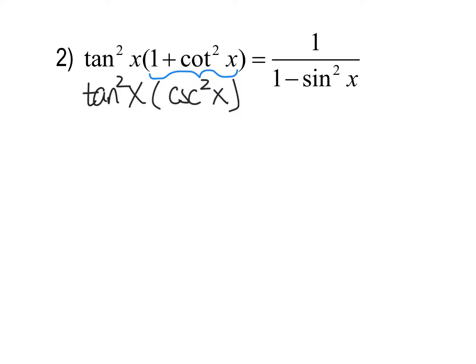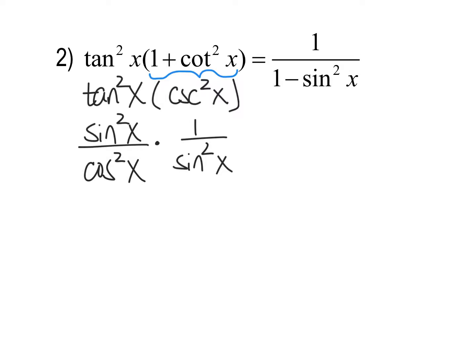Tangent squared x — if you remember that tangent x is sine over cosine, it works the same way squared: you just square both functions. So tangent squared is sine squared over cosine squared. And cosecant squared I'll write as one over sine squared. All those reciprocal identities and properties apply to squared functions as well. Now I can cancel the sine squareds, and what I have left is one on top and cosine squared x on the bottom.